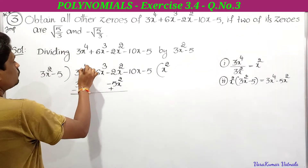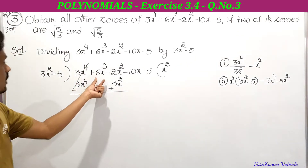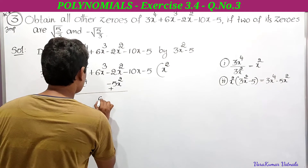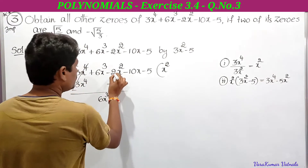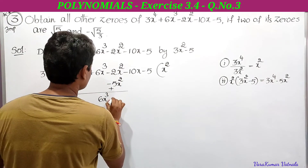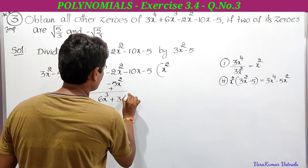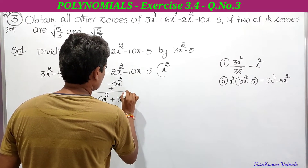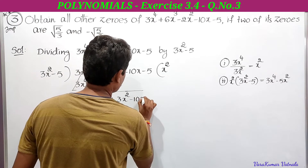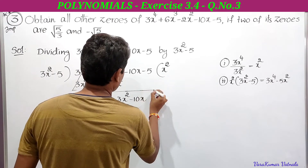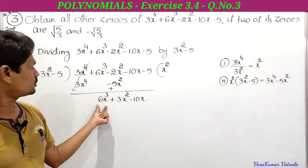Upon subtraction, signs change: 3x⁴ - 3x⁴ cancels. Then -2x² + 5x² = +3x². Bring down -10x. The new dividend is 6x³ + 3x² - 10x.